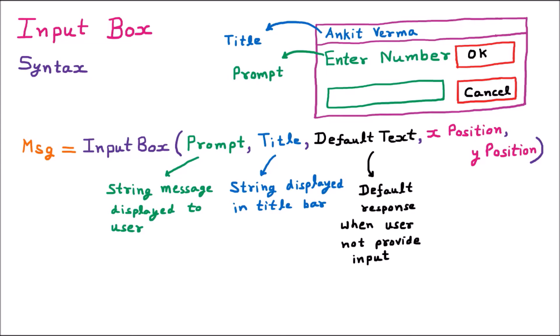If an input box appears and the user simply presses OK or Cancel, this default text will be taken. The next parameters are the X and Y position. These two positions give the X and Y coordinates where the input box will be positioned on the screen. If you want the input box to appear at a specific location, you can provide these position values.